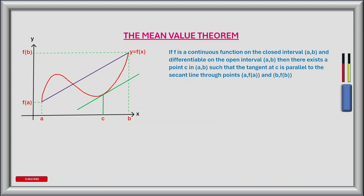If we look at the graph on the left, we see the purple secant line here and the green tangent line here. The secant line is drawn between the interval a and b, and the tangent to the curve is at point c on the x-axis. The secant line is parallel to the tangent.